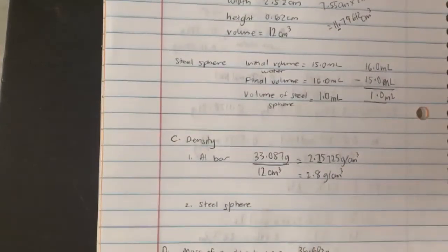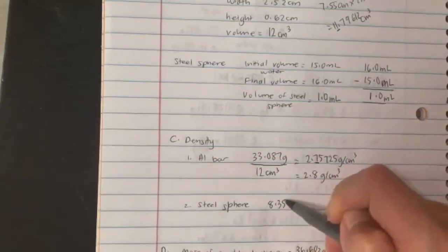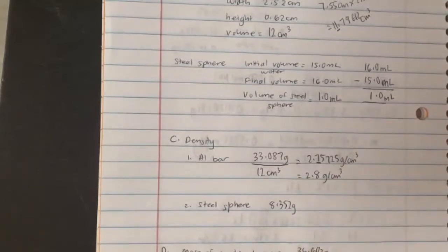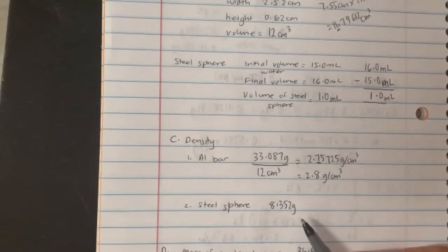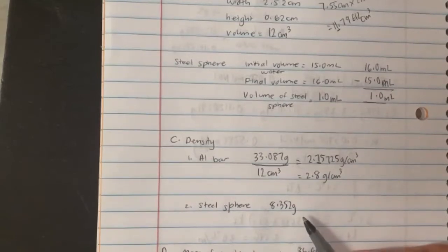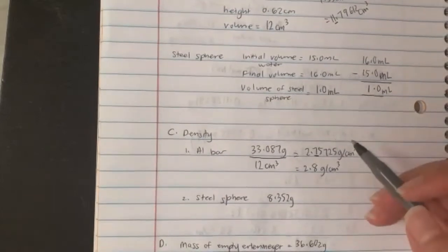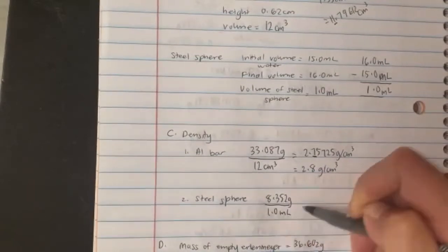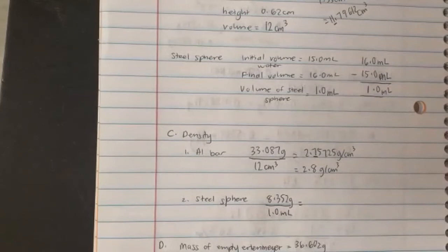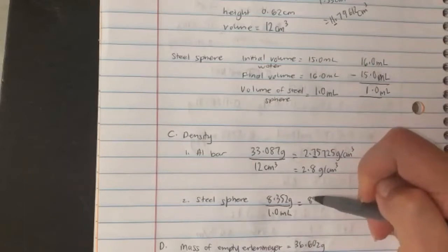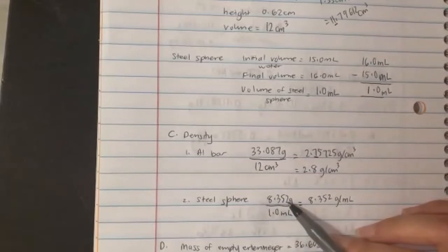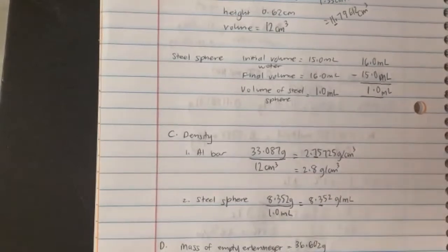Same thing with the steel sphere. We take 8.352 grams—this is a reminder, do not use these numbers, you have a separate set of numbers under the Excel file for dry lab data. 8.352 divided by 1.0 gives us four sig figs and two sig figs, so I'll keep only two. My answer is 8.4 grams per milliliter.